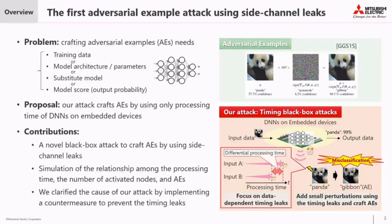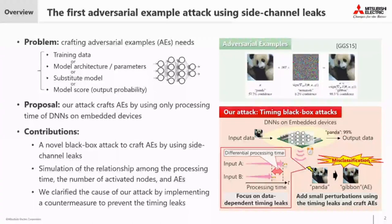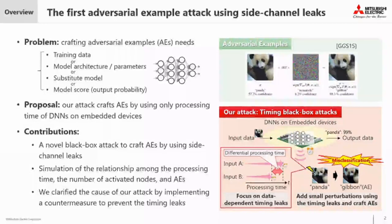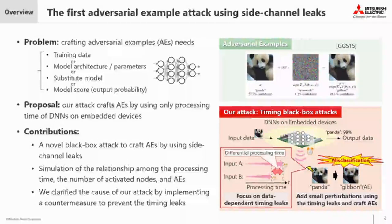This slide shows a quick overview of my talk. We focus on adversarial examples, AEs. We introduced a first attack to craft AEs based on differential processing time according to input data. The problem is that crafting AEs typically needs training data, model architecture and parameters, the subject model, or model scores. But our attack crafts AEs by using only processing time on DNNs on embedded devices.